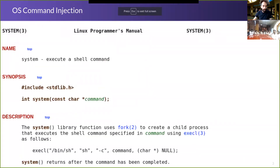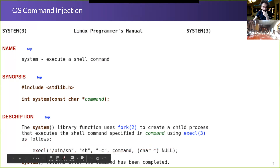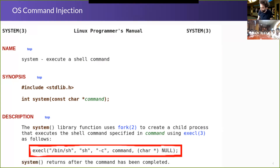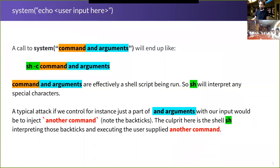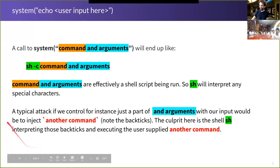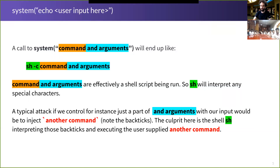For typical command injection, we have a call to system, the shell gets invoked, and the shell interprets a command. When an attacker is able to inject strings or substrings into the arguments, we can have shell meta characters — backticks, semicolons — to convince the shell to run some other command than the intended one. This is what happens when you call system in different programming languages: it invokes the shell, which interprets the command and its arguments essentially as a small shell script.